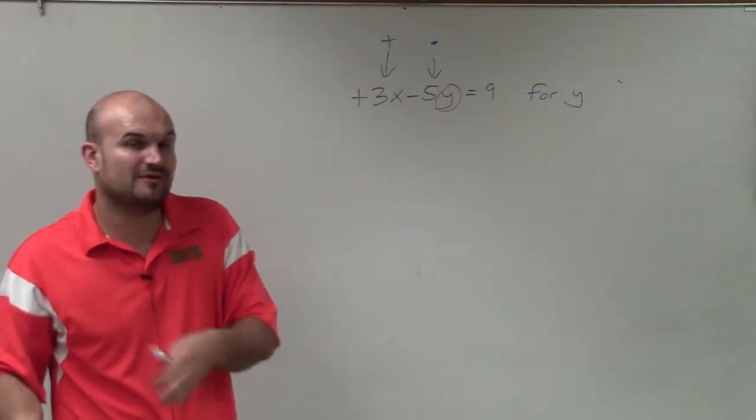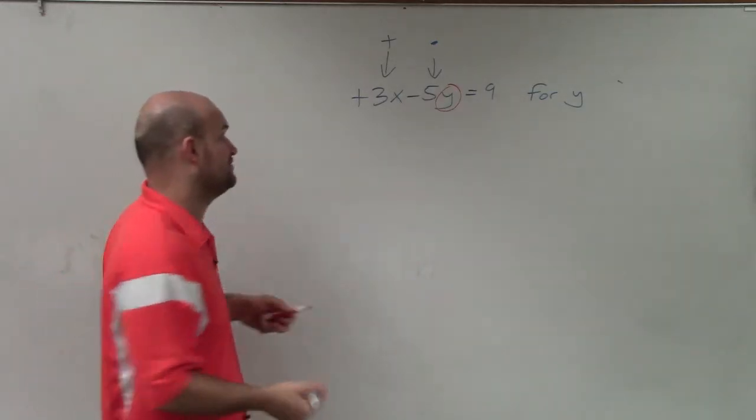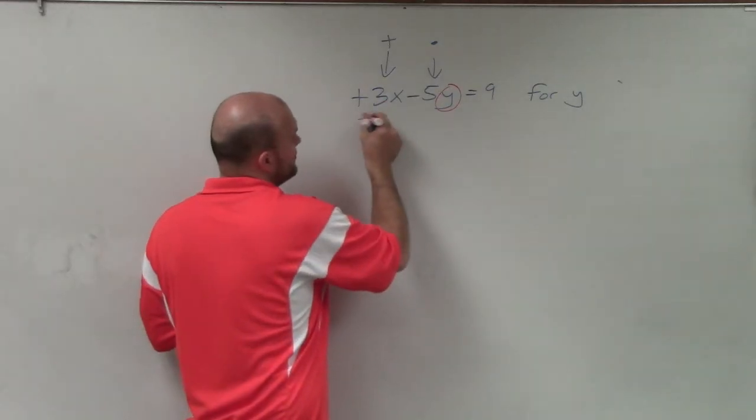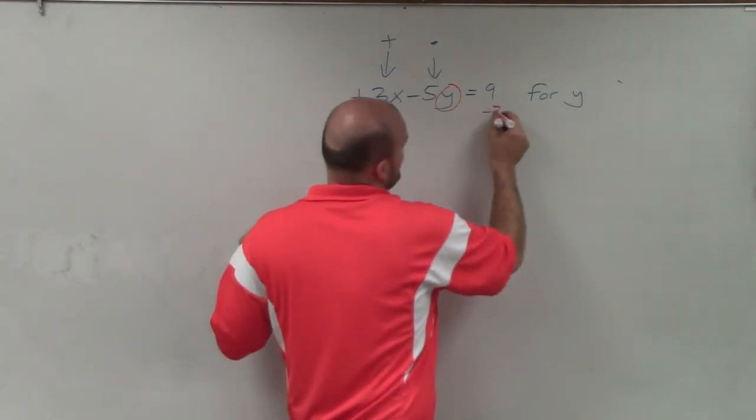So when I'm using our reverse order of operations, we always want to undo addition and subtraction first. So to undo a positive 3x, I'll subtract 3x on both sides.